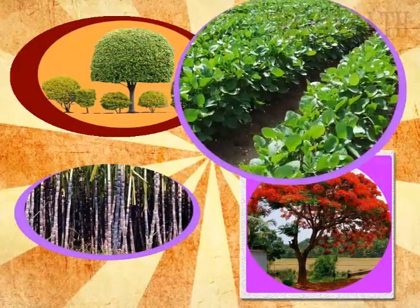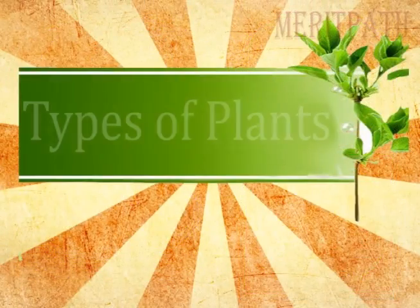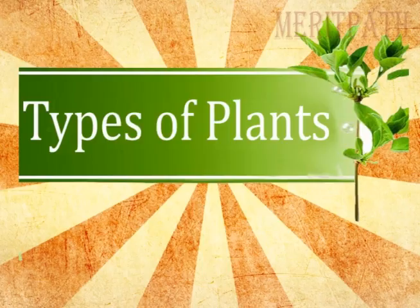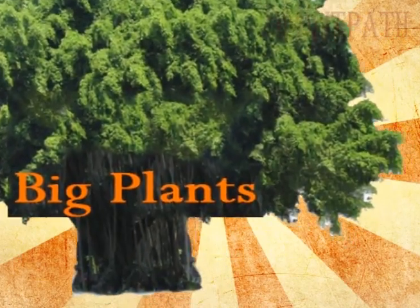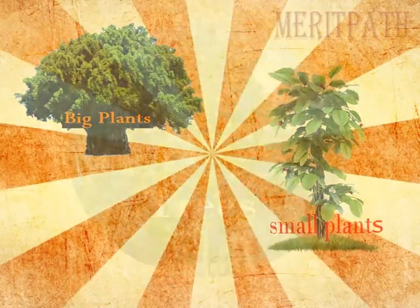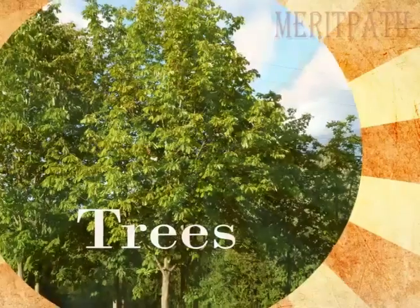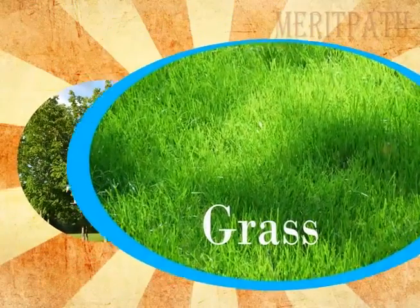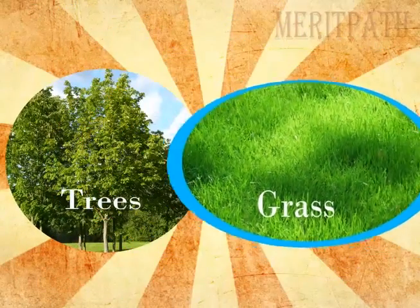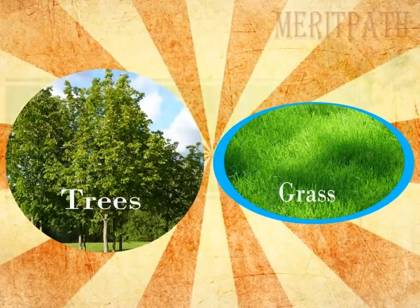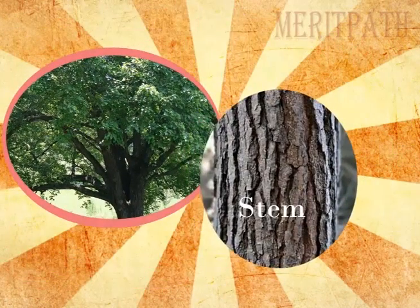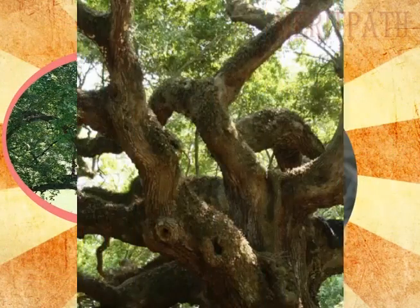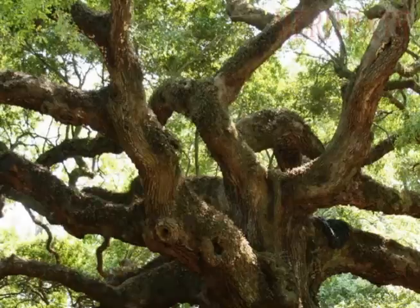Let us learn about the types of plants: big plants and small plants. A tree is a big plant; grass is a very small plant. Trees have a strong woody stem and they live for many years.